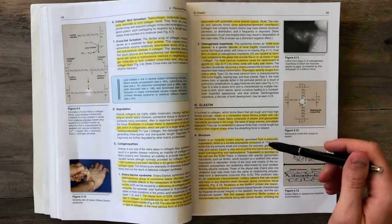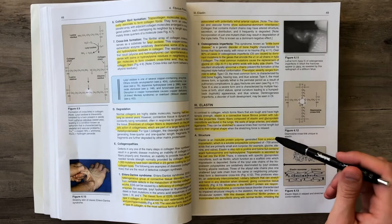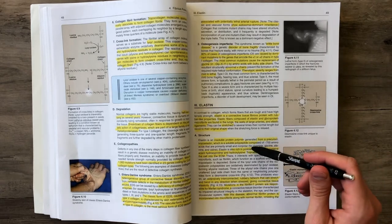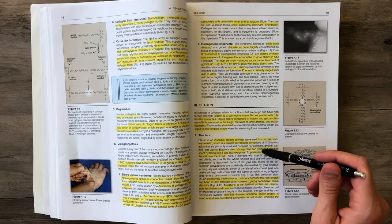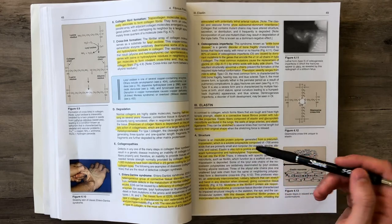It's an insoluble protein polymer, but its precursor is a soluble polypeptide composed of up to 700 amino acids. Once again, it's rich in proline like collagen, but also rich in lysine and has very little amounts of hydroxyproline or hydroxylysine.